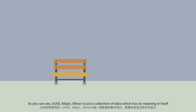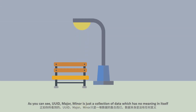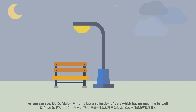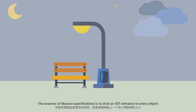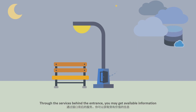As you can see, UUID, Major, and Minor are just a collection of data which have no meaning in themselves. The essence of iBeacon's specification is to attach IoT entries to every object. Through the service behind those entries, you can get relevant and available information.